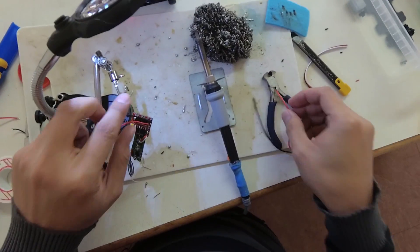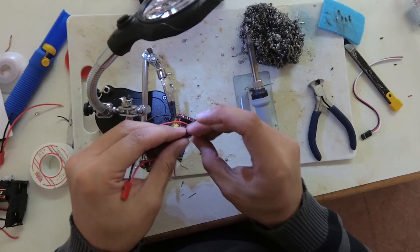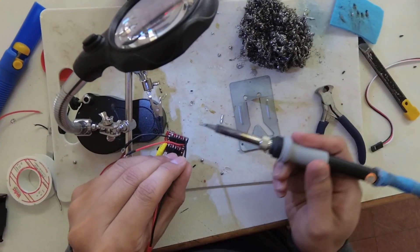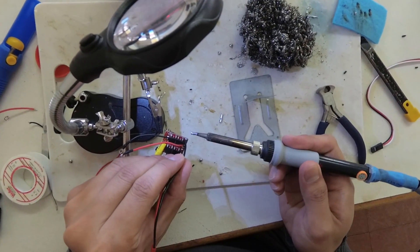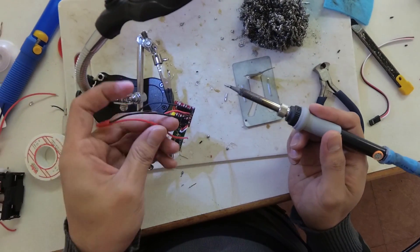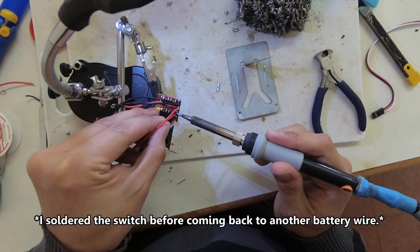Then solder the battery wires on, I leave them long for now, so I can test fit and cut them later. And finally, don't forget the on-off switch.